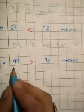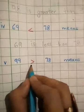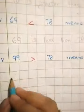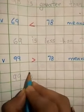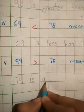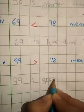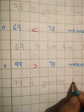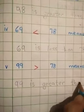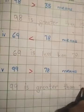Question No. 5. 99 is greater than 78. 99 is greater than 78.